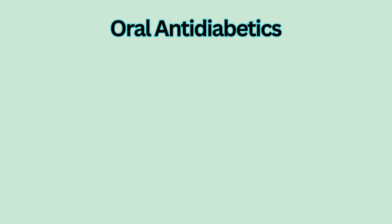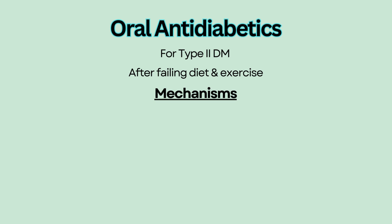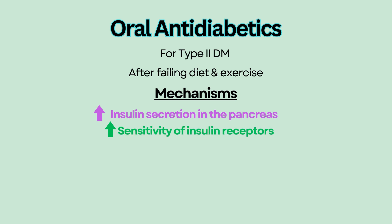Oral anti-diabetic medications are prescribed for patients with type 2 diabetes mellitus after adequate control with diet and exercise alone. Oral agents are not for type 1 diabetes because those patients need direct insulin replacement. Oral agents reduce blood glucose level by stimulating the pancreas to release more insulin and increasing the sensitivity of insulin receptors so that cells can take in glucose more effectively.